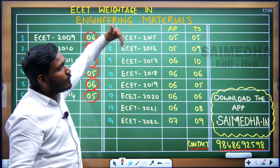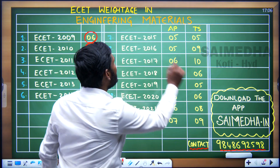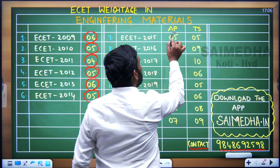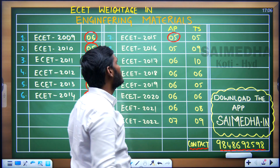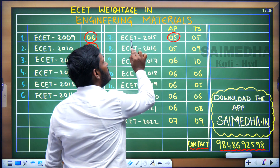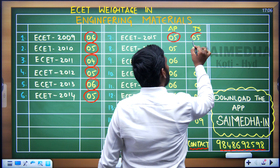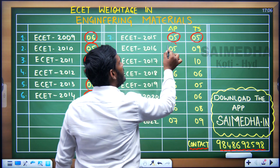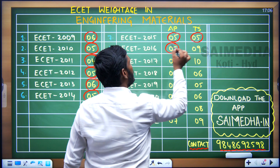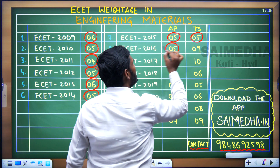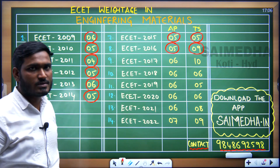Whenever we go for AP and TS, we have taken both AP as well as TS papers. In ESET 2015, 5 questions were asked in the AP paper. Similarly in TS, again 5 questions. Then in the TS paper for 2016, the weightage suddenly became more — 9 questions were asked from Engineering Materials.